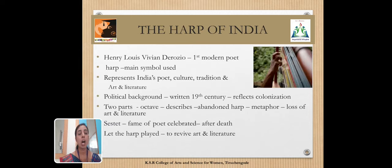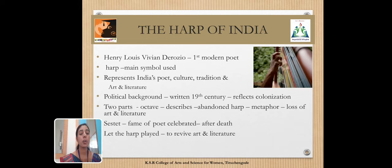The first poem, 'The Harp of India,' was written by Henry Louis Vivian Derozio. He is considered the first modern poet. The harp is used as the main symbol throughout this poem, representing Indian poetry, culture, tradition, art, and literature. The poem has a colonial background, written in the 19th century which reflects the colonization of India. The poem has two parts: the octave and the sestet. In the octave, the poet describes the abandoned harp as a metaphor, aligning with the loss of art and literature.